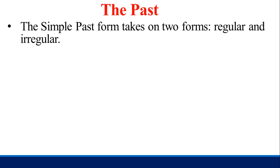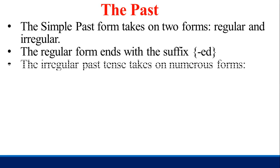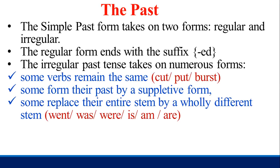Turning to the past: the simple past form takes on two forms — regular and irregular. The regular form ends with the suffix '-ed.' The irregular past tense takes on numerous forms; for example, some verbs remain the same, such as 'cut,' 'coat,' and 'burst.'